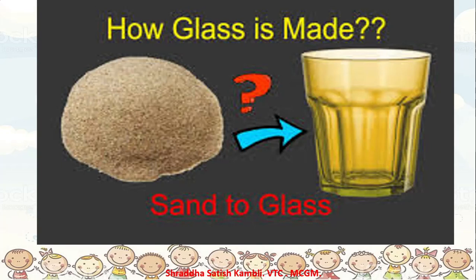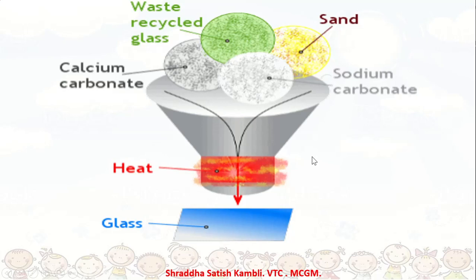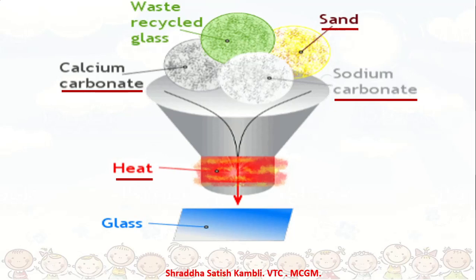Let us see the process in which sand is converted to glass. In the process, sand is mixed with various chemicals like sodium carbonate and calcium carbonate. You will learn about all these chemicals when you go to a higher class. Here, let us remember that sand is mixed with certain chemicals and then it is heated in a very big vessel which is called a furnace. After it is heated for a long time, you will see that glass is produced.